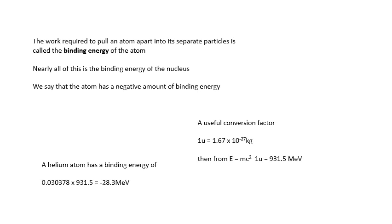The work required to pull an atom apart is called the binding energy of the atom. Most of this binding energy — in fact, nearly all of it — is the binding energy of the nucleus, because it takes so much work to pull the nucleus apart. Binding energy is actually a negative quantity; it's the work you would have to do to pull it to pieces. It's like having an overdraft of £200 — that's your binding energy, a negative amount. If somebody gave you £200 you'd have zero. So binding energy is a negative quantity: it's not actual energy the atom has, it's how much work you'd have to do to pull it to pieces.